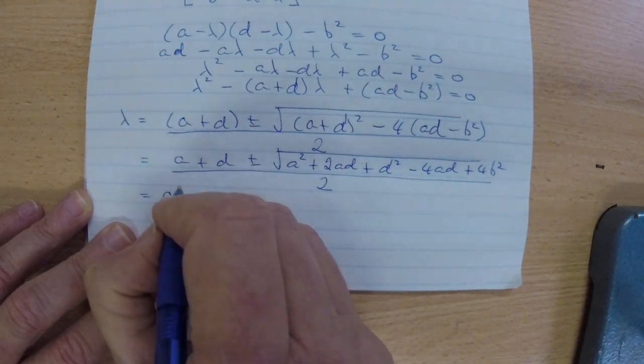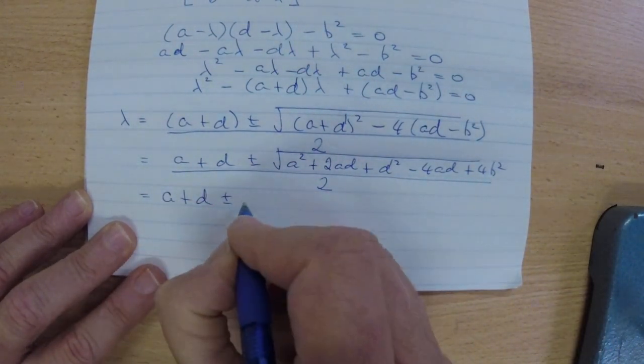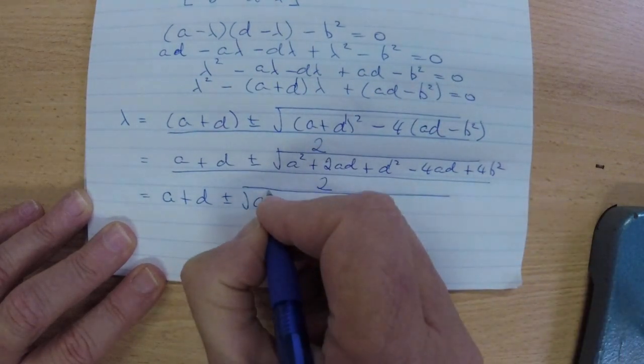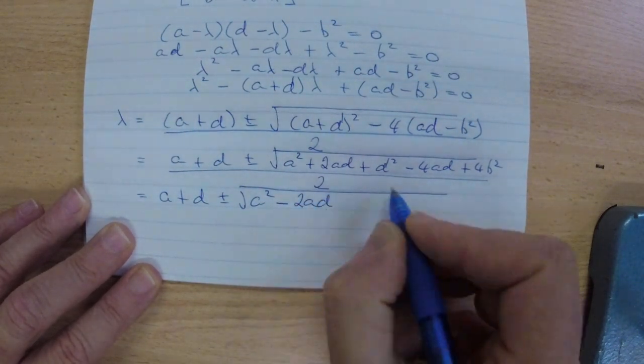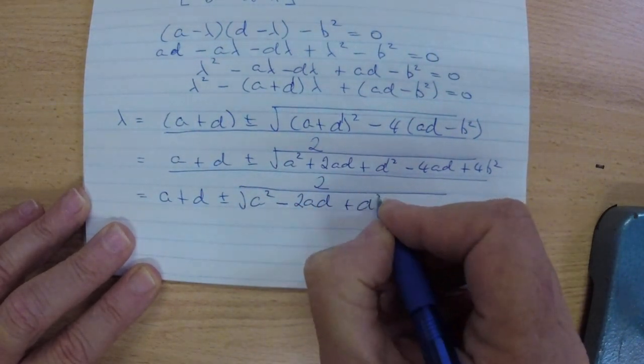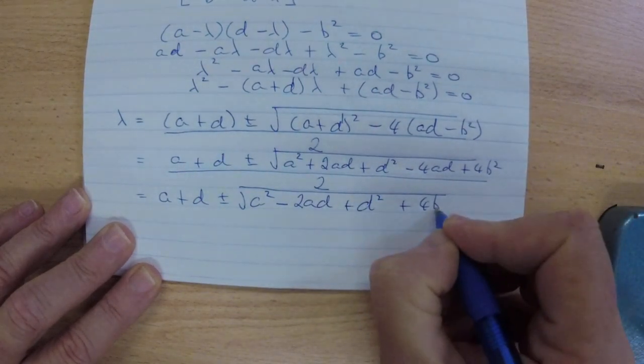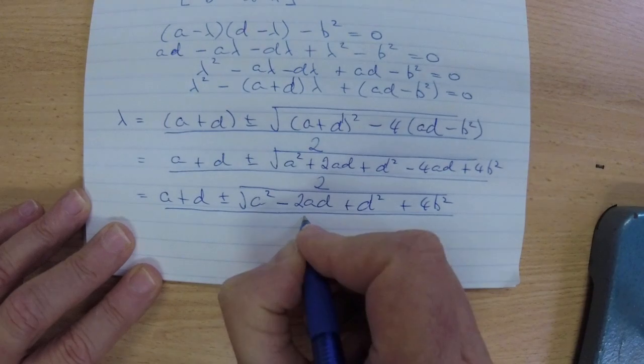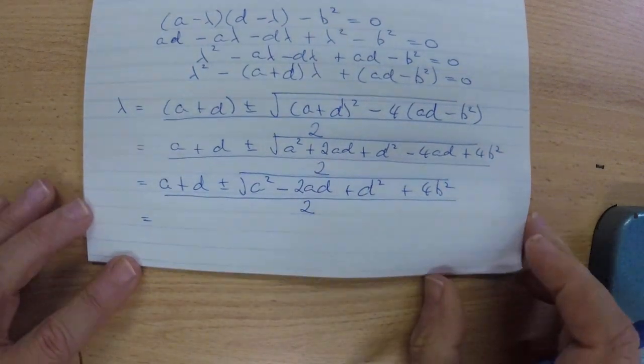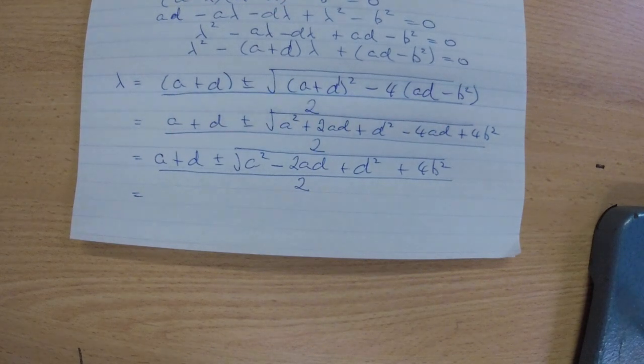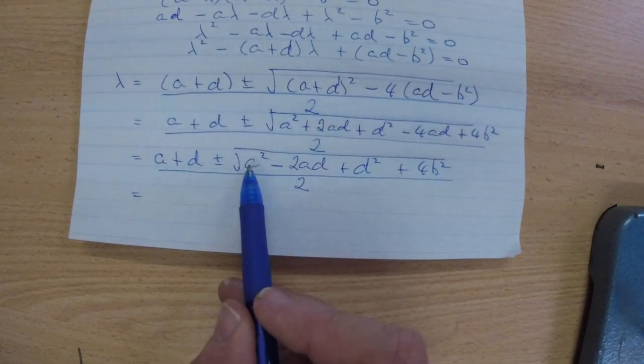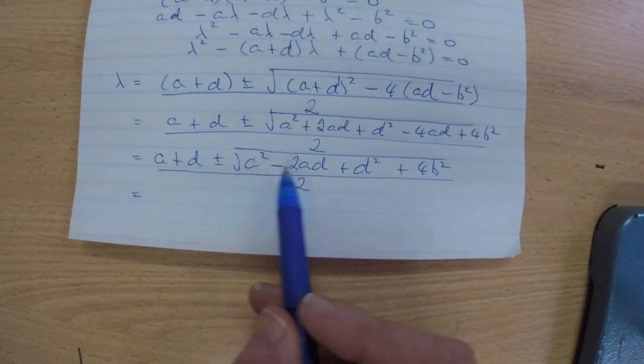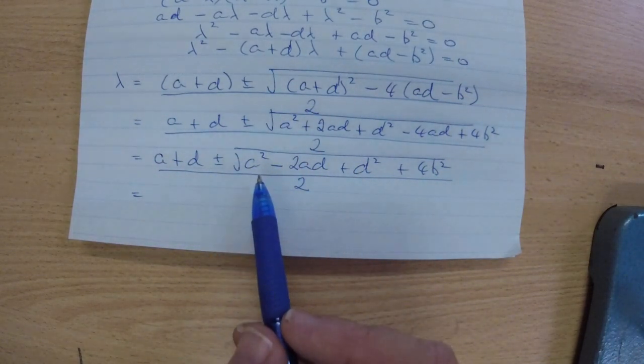Collecting like terms, we have A plus D plus minus the square root of A squared plus 2AD minus 4AD is minus 2AD plus D squared, still plus 4B squared, all divided by 2. And this is the point where we have to stop and go, what do we need for this to become a real solution? Well, we need a positive value for this expression under the radical sign. If that turned out to be less than zero, we'd have imaginary solutions.